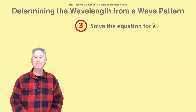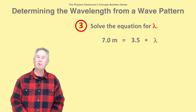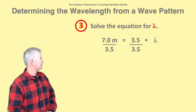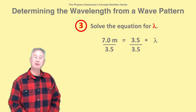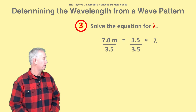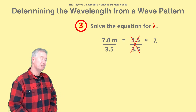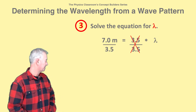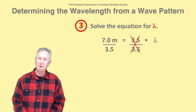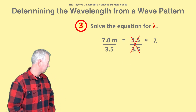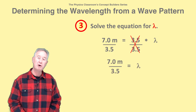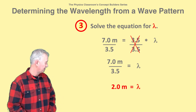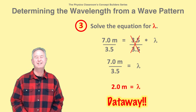The third step involves solving your equation for wavelength — that is, lambda. Divide both sides of the equation by 3.5. The 3.5 cancels from the right side and appears in the denominator of the left side, so wavelength equals 7.0 meters divided by 3.5. Wavelength equals 2.0 meters.